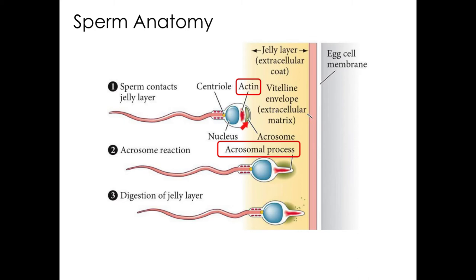Between the acrosomal vesicle and the nucleus there is globular actin — actin that has not yet polymerized to form a filament. When the sperm makes contact with the egg, the globular actin polymerizes into filamentous actin and forms a finger-like projection known as the acrosomal process.